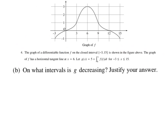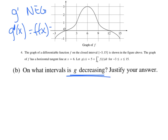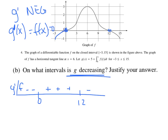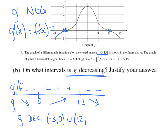The moment I read 'g decreasing,' my brain says g prime has got to be negative. We know g prime of x is equal to f. Setting it equal to 0, f equals 0 at x = 0 and x = 12. Constructing the sign chart for g prime slash f with x equals 0 and x equals 12: we have negatives before 0, then above (positive), then below (negative). g is decreasing, then increasing, then decreasing. Keeping in mind the interval, g is decreasing on negative 3 to 0 union 12 to 15 because g prime slash f is negative.